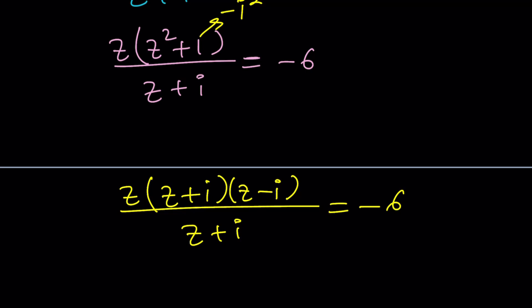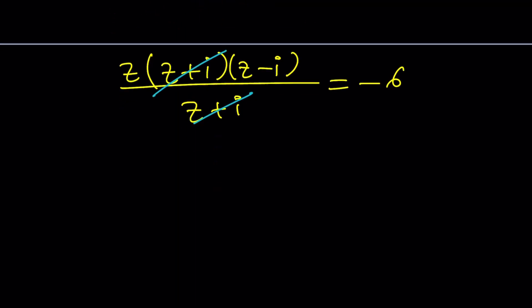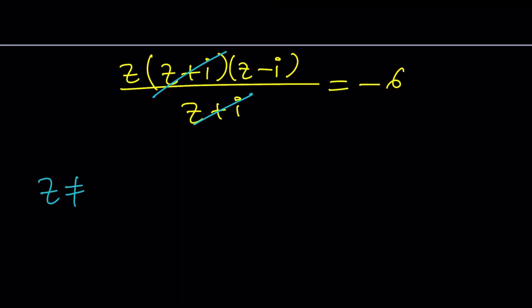Now, at this point, you can go ahead and cancel out Z plus I. But we do need the requirement. Z should not equal negative I. We'll talk about that. We'll save that for future use. And then after that, under those conditions, we have Z squared minus IZ equals negative 6.